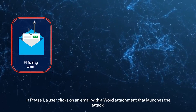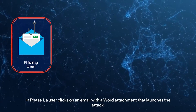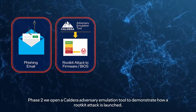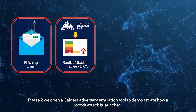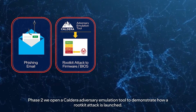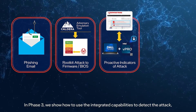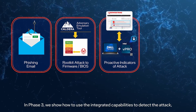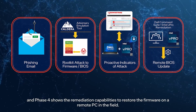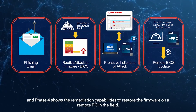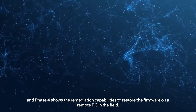In Phase 1, a user clicks on an email with a Word attachment that launches the attack. In Phase 2, we open a Caldera Adversary Emulation Tool to demonstrate how a RootKit attack is launched. In Phase 3, we show how to use the integrated capabilities to detect the attack. In Phase 4, we show the remediation capabilities to restore the firmware on a remote PC in the field.